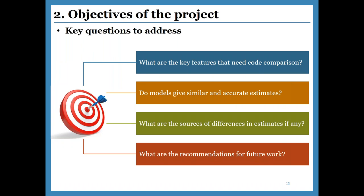The four key questions we want to address are: first, what are the key features or source code that need to be compared before developing an operating model for the comparison project? Second, do the estimation models give similar and accurate estimates under a range of cases? Third, what are the sources of differences in estimates, if any? And fourth, what recommendations can be drawn for future model development after examining the similarities and differences of these estimation models?